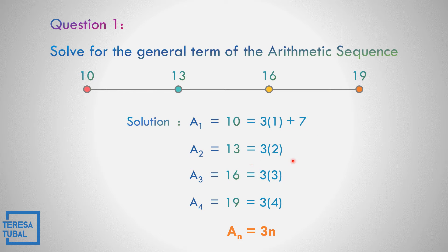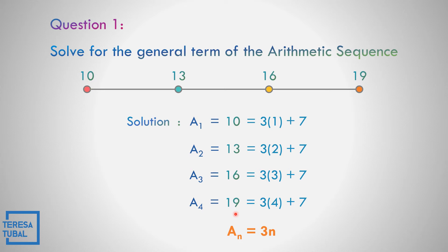How about the second term? The number to be added is equal to 7 also. So 3 times 2 is 6, plus 7, that is equal to 13. How about the third term? The number to be added is equal to 7. 3 times 3 is 9, plus 7, that is equal to 16. How about the fourth term? 3 times 4 is 12, plus 7 is equal to 19. So the general term of this arithmetic sequence is a sub n is equal to 3n plus 7.